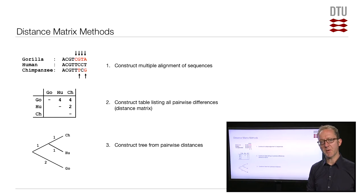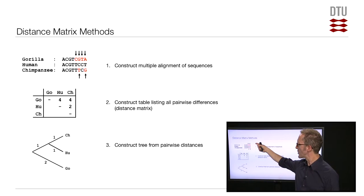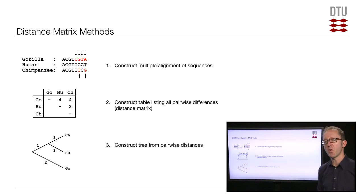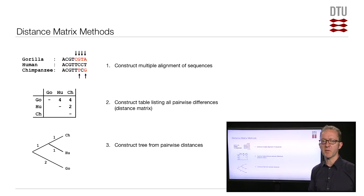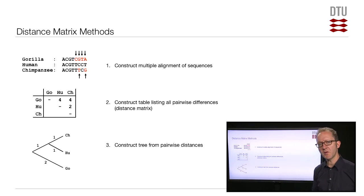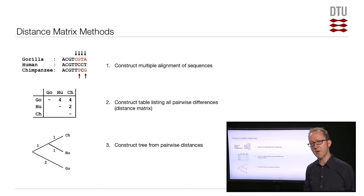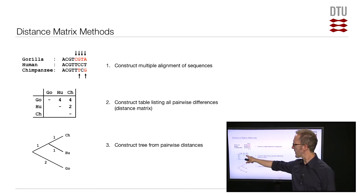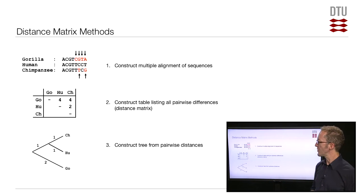The genetic distance between a pair of sequences is simply the number of mutations separating them. In this particular case, if you compare gorilla and human, you can see that there are four mutations separating them — four positions in which the gorilla sequence differs from the human sequence. So we build a small distance matrix, which is just a table showing all the pairwise genetic distances, and in the entry for gorilla versus human, we put the number four, indicating there are four mutations.